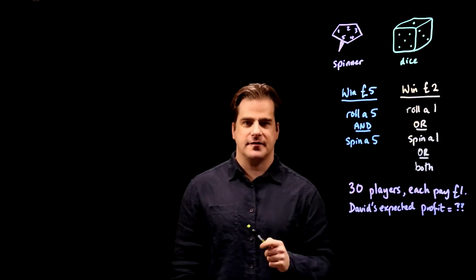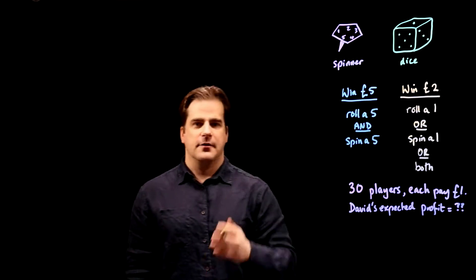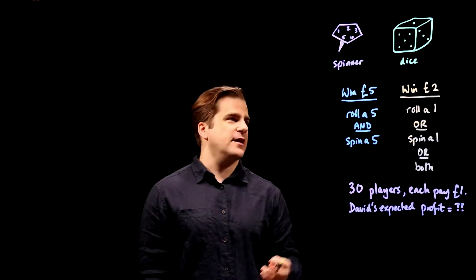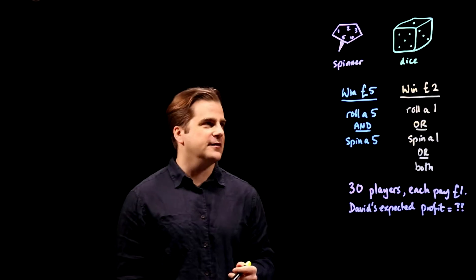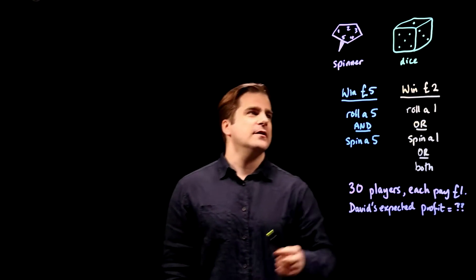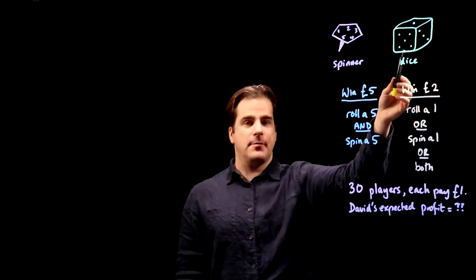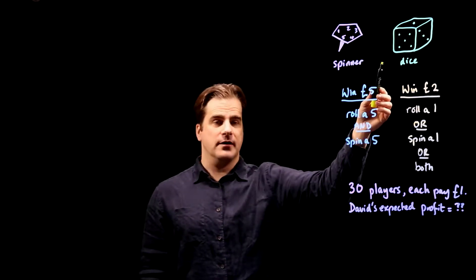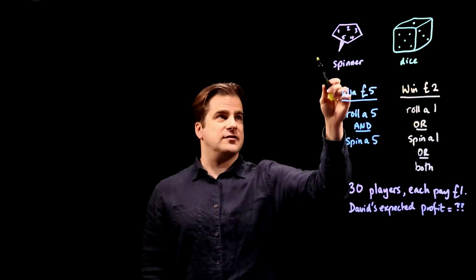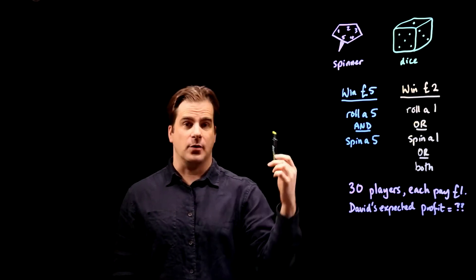So this kid called David has set up this game. He's got a six-sided dice — I know the singular should really be die, but they've used dice, and this is a math paper, not an English paper. Six-sided dice, five-sided spinner. Both are fair, so probability of rolling any one of the six numbers with the dice is one in six. Probability of spinning any one of the numbers with a spinner is one in five.